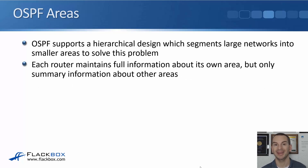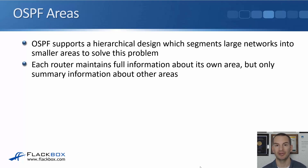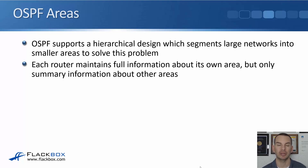To mitigate against this, OSPF supports a hierarchical design which segments large networks into smaller areas. Each router maintains full information about its own area, but only summary information about other areas. So the routers are going to have less routes in their routing table. And if a new link comes up or goes down in another area, it's not going to affect that router.